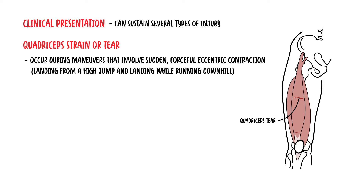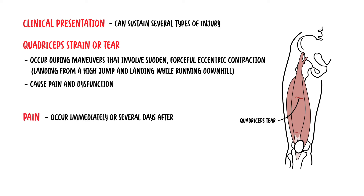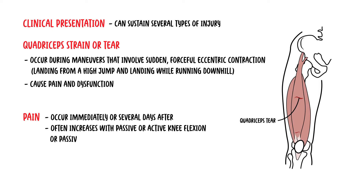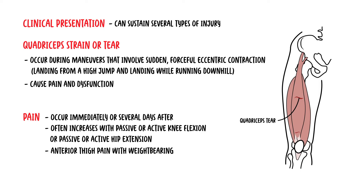Quadriceps muscle strains cause pain and dysfunction. Pain can occur immediately or several days after the insult. Pain often increases with passive or active knee flexion or passive or active hip extension. Pain is often in the anterior thigh compartment with weight bearing and on ambulation. There is also tenderness over the muscle that is torn.